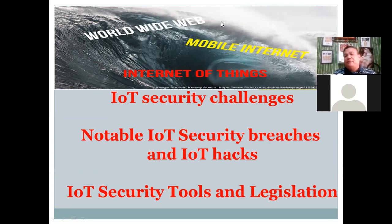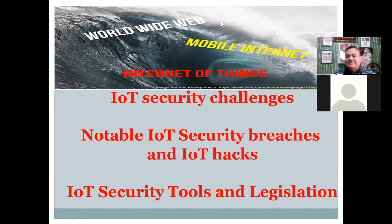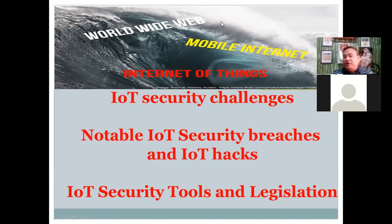In December 2013, a researcher at enterprise security firm Proofpoint Incorporated discovered the first IoT botnet. According to the researcher, more than 25% of the botnet was made up of devices other than computers, including smart TVs, baby monitors, and household appliances. In 2015, security researchers Charlie Miller and Chris Valasek executed a wireless hack on a Jeep, changing the radio station, turning the windshield wipers and air conditioning on, and stopping the accelerator from working. They said they could also kill the engine, engage the brakes, and disable the brakes altogether. Miller and Valasek were able to infiltrate the car's network through Chrysler's in-vehicle connectivity system, Uconnect.